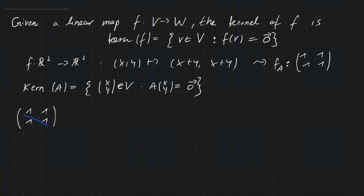So let's calculate the kernel of A. We have the matrix 1, 1, 1, 1 and we need to bring this into upper triangular form where everything on the bottom is zero. We subtract the first row from the second row — they're both identical — and we get 1, 1 on top and 0, 0 on the bottom. This is upper triangular form, so we are done.